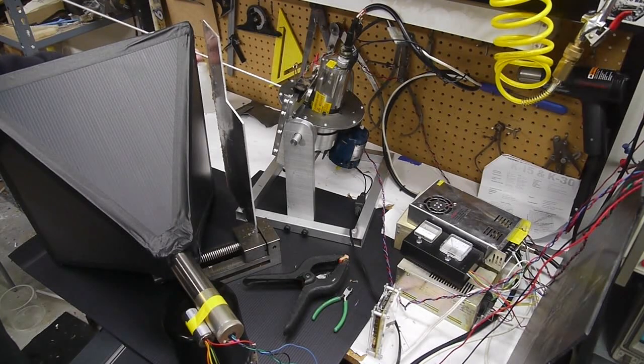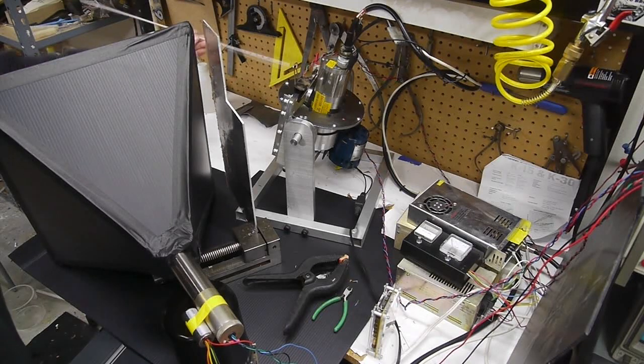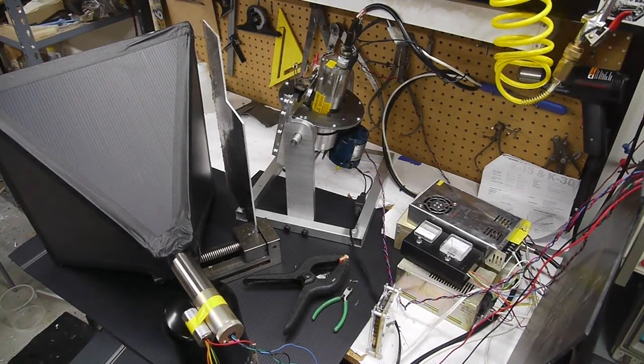So the X-rays come out of this disc in a beam here, and as the disc spins, the X-ray beam moves in an arc like this across the field of view of the imaging device.